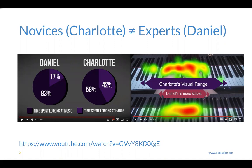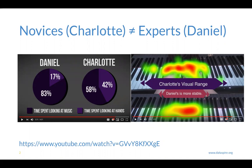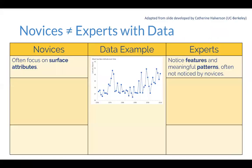At the end of that video, there are graphics that give us a good sense of the differences between Charlotte the novice versus Daniel her instructor, the more expert, in terms of time spent looking at music and time spent looking at their hands. The graphic gives us a sense of the visual range that Charlotte had versus Daniel, which is more stable. The specific components of these visualizations are not as important as the takeaway: there's a real difference between Charlotte, a relative novice, and her instructor Daniel. I want to use this to lead into thinking about how our learners think about, look at, and make sense of data inside their heads very differently than we do as experts.